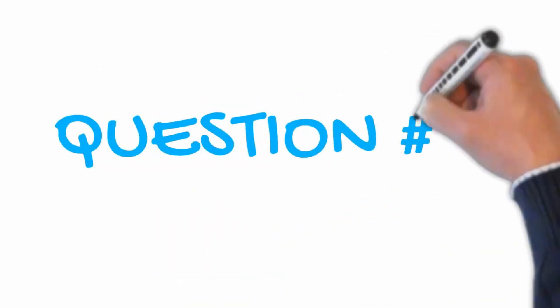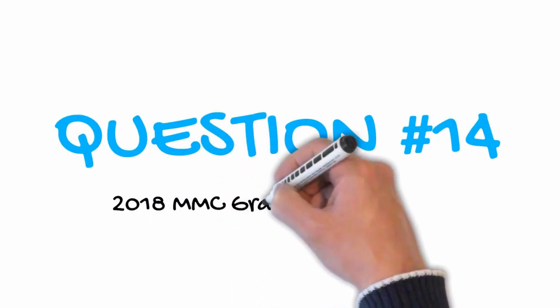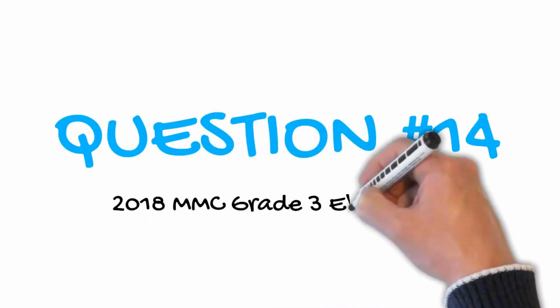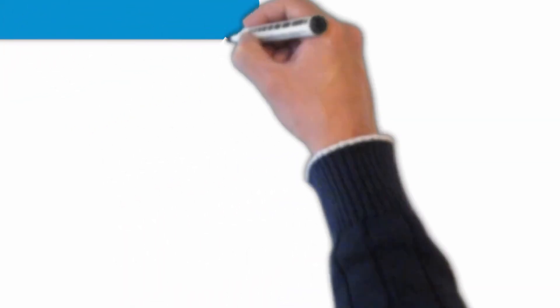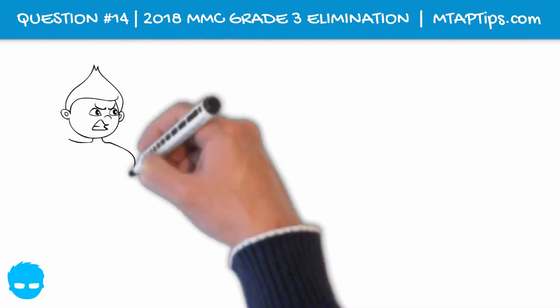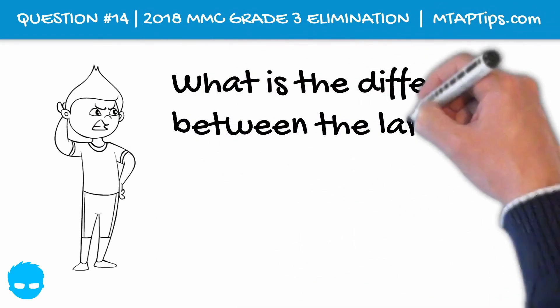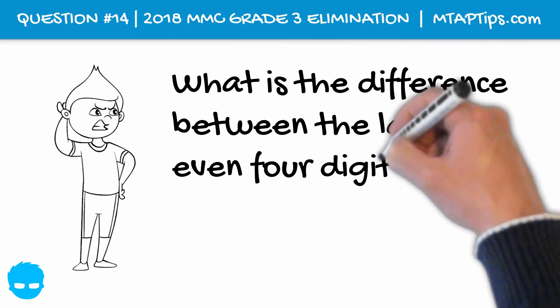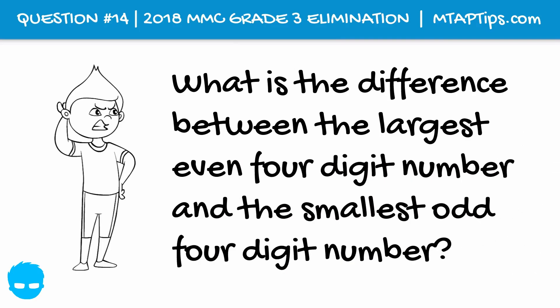Question Number 14, 2018 AMC Grade 3 Elimination. What is the difference between the largest even 4-digit number and the smallest odd 4-digit number?